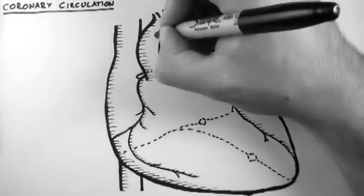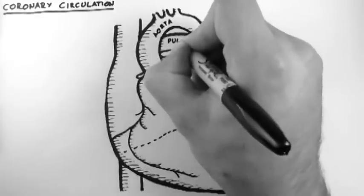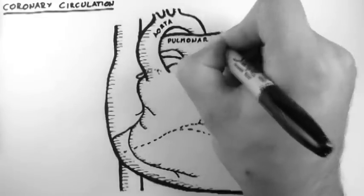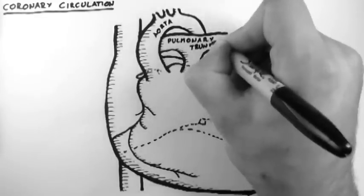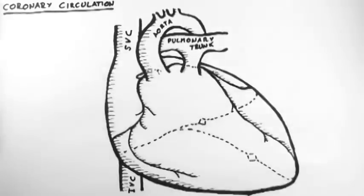So first of all, let's label the great vessels. Here's the aorta, the pulmonary trunk, the superior vena cava, and the inferior vena cava.